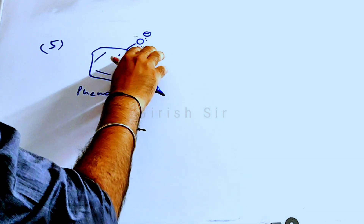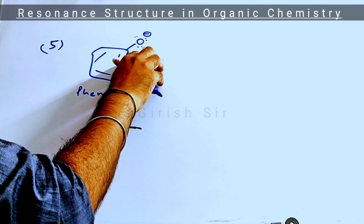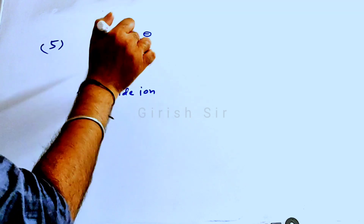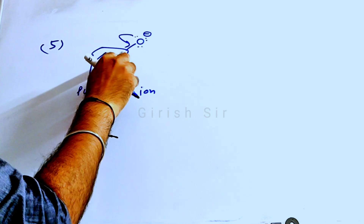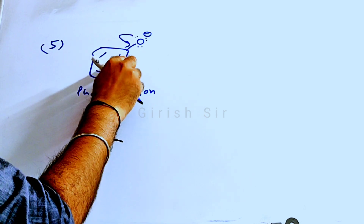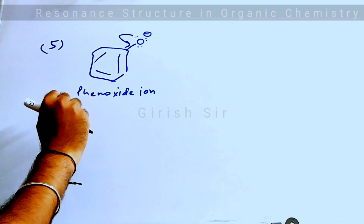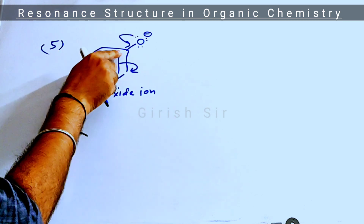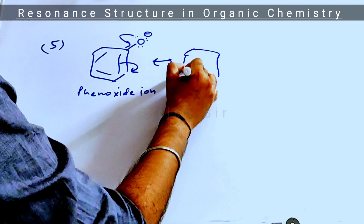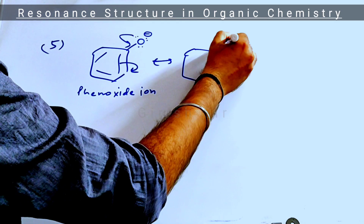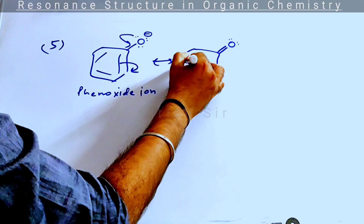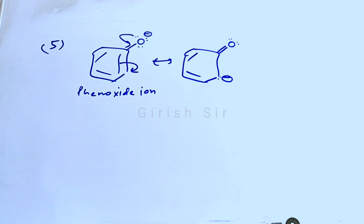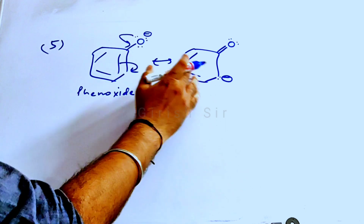This is phenoxide. This oxygen atom has a negative charge and is attached to the benzene ring. The lone pair on the oxygen atom moves towards this pi bond. As a result, you get a new pi bond between carbon and oxygen. To maintain tetravalency of this carbon, this pi bond breaks, resulting in a double bond here and a lone pair — along with a negative charge — appearing on this carbon.